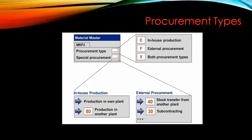In the material master you have two options to select the procurement type. Whenever you need to procure a product, you have only two sources: either you can do the procurement in-house or it can be external procurement. In-house production means we are going to manufacture this product in-house — it can be a raw material, a semi-finished product, or a final assembly. Either we manufacture it in-house or we buy it from a third-party vendor.